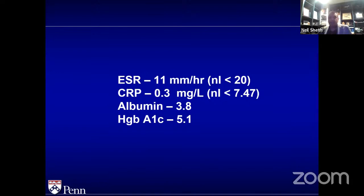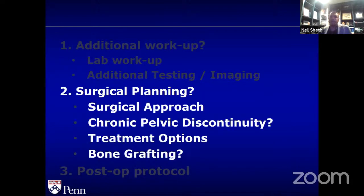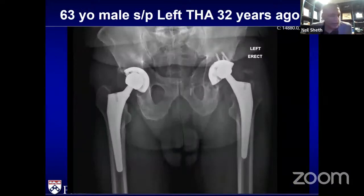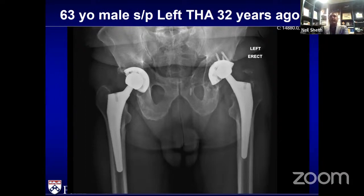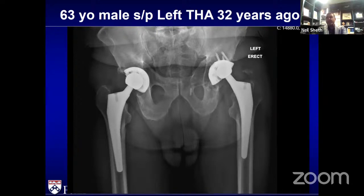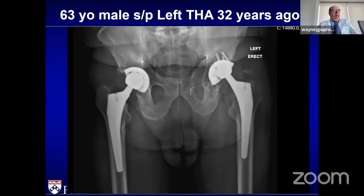A question with regards to tri-flange or cup-cage enthusiasts: what do you do when you have a pre-operatively made custom device, then you go in, do the debridement, and your device doesn't fit according to plan because some things that looked like bone on the CT scan are actually soft tissue?